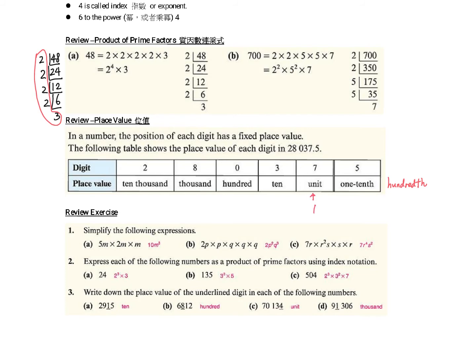This digit is 7. This 3 is not just 3, it is 30, which is 3 times 10. This digit is 0, which is 0 times 10 squared.